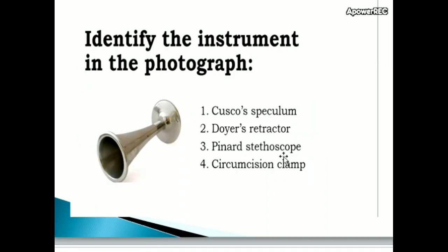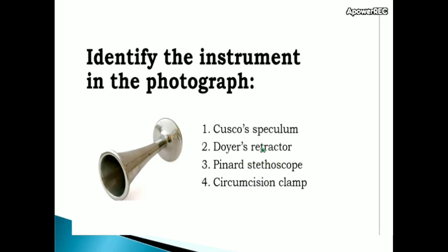Next question: identify the instrument in the photograph. Options: Cusco's speculum, Doyen retractor, Pinard stethoscope, circumcision clamp. Correct answer is Pinard stethoscope. A Pinard horn is a type of stethoscope used to listen to the heart rate of the fetus during pregnancy. It is hollow, horn-shaped, and made of wood or metal.